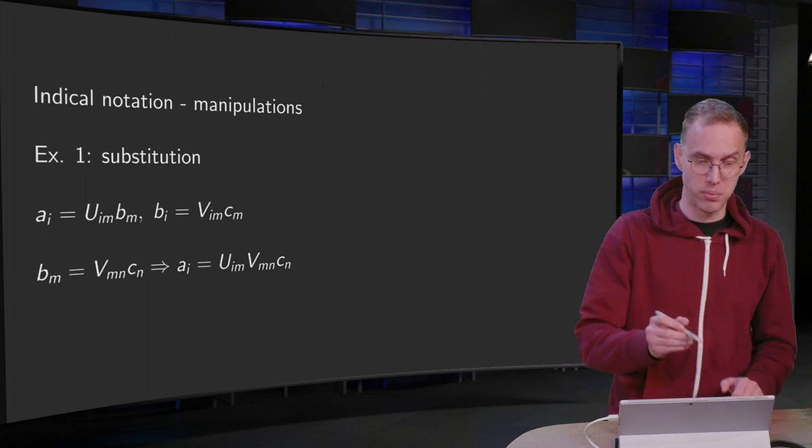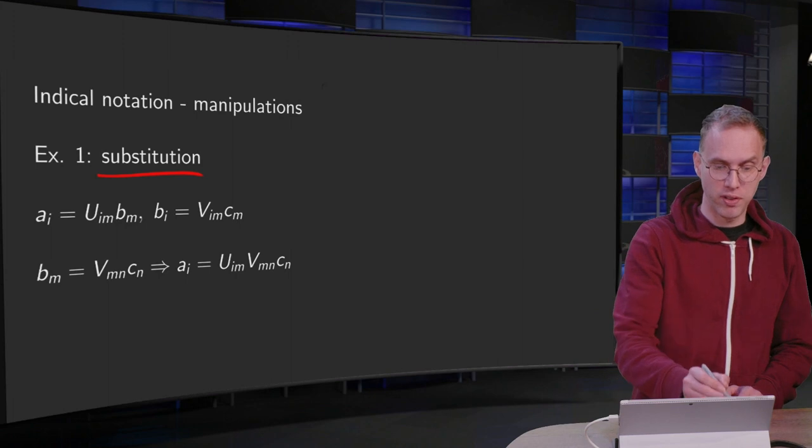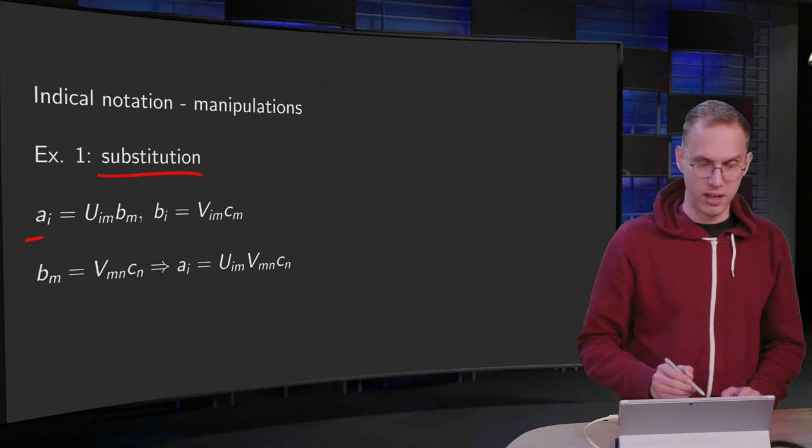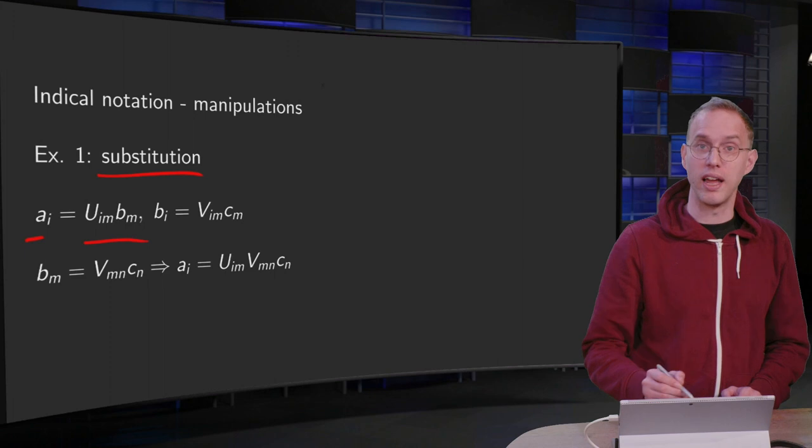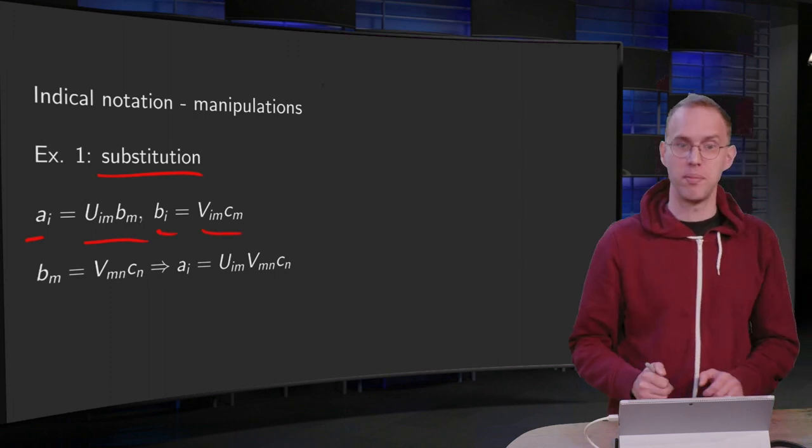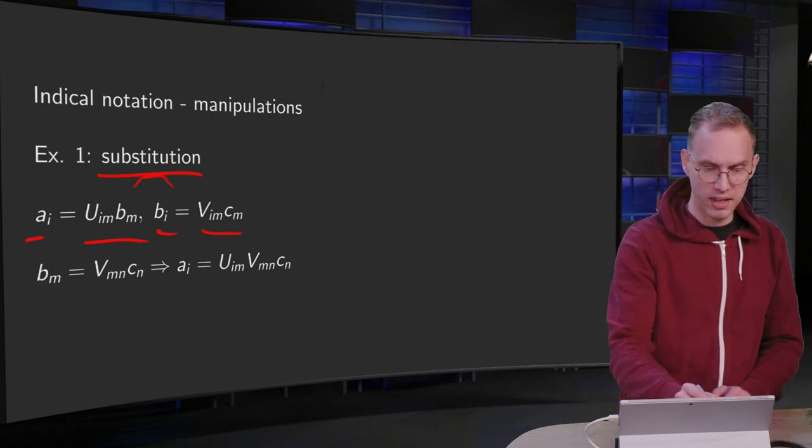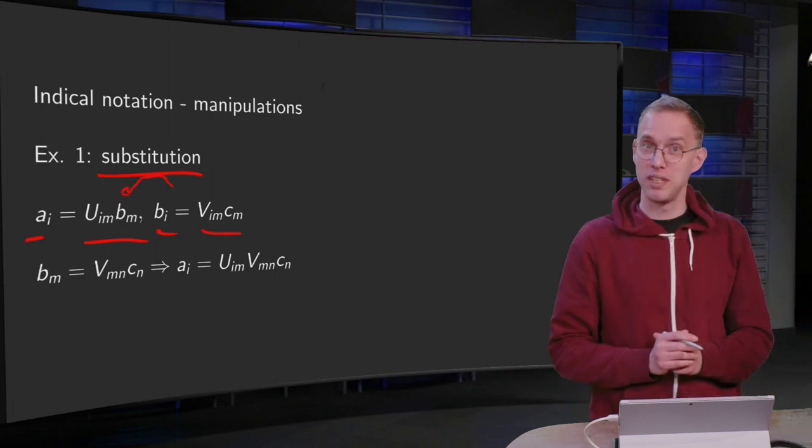So first example: substitution. What does this mean? Suppose we have a_i = U_im b_m and b_i = V_im c_m, and now we want somehow to substitute this b_i in this expression for A. So what do we need to do?